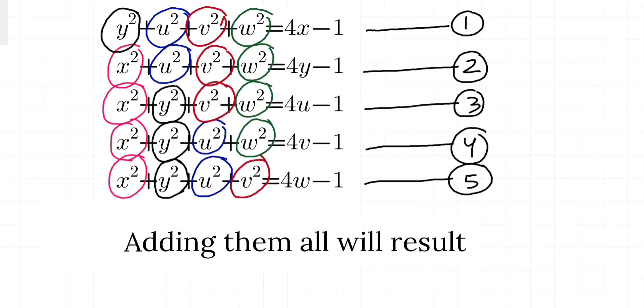Now before adding them all, let's count how many variables are there. As you can see, there are 4x², 4y², 4u², 4v², and 4w². So adding them all will result in 4x² + 4y² + 4u² + 4v² + 4w² = 4x + 4y + 4u + 4v + 4w - 5.